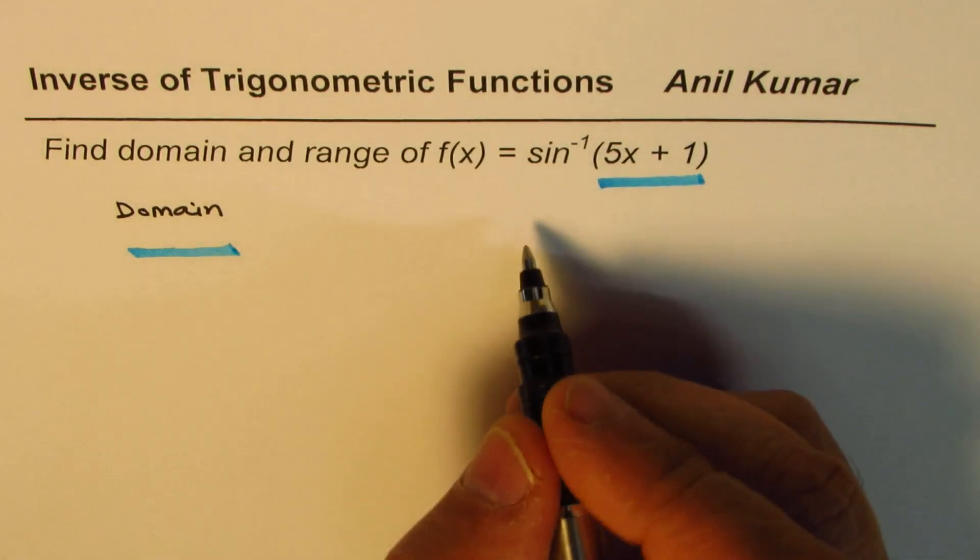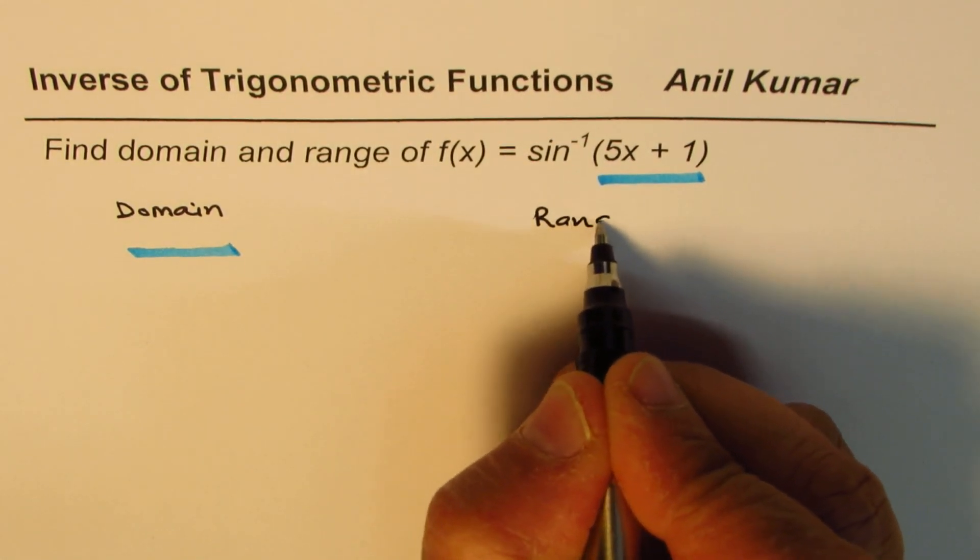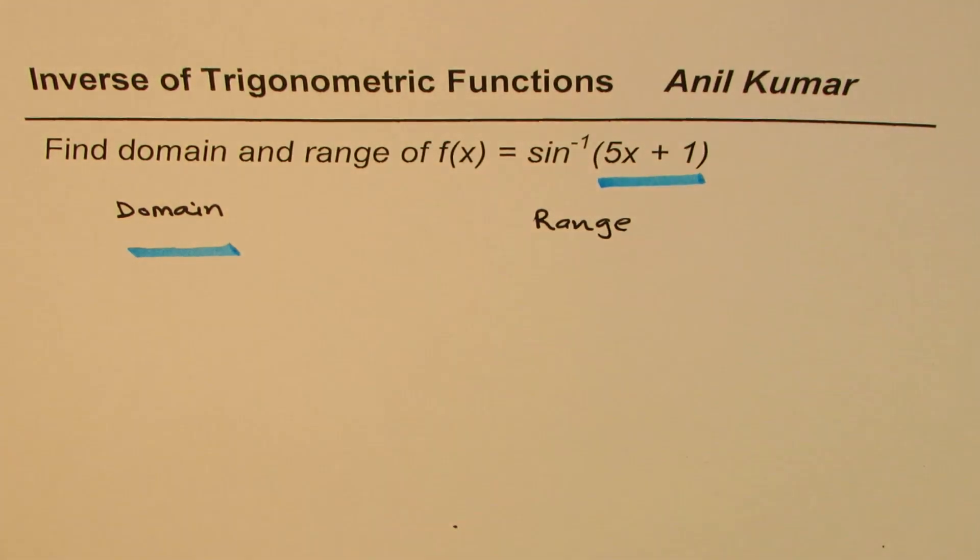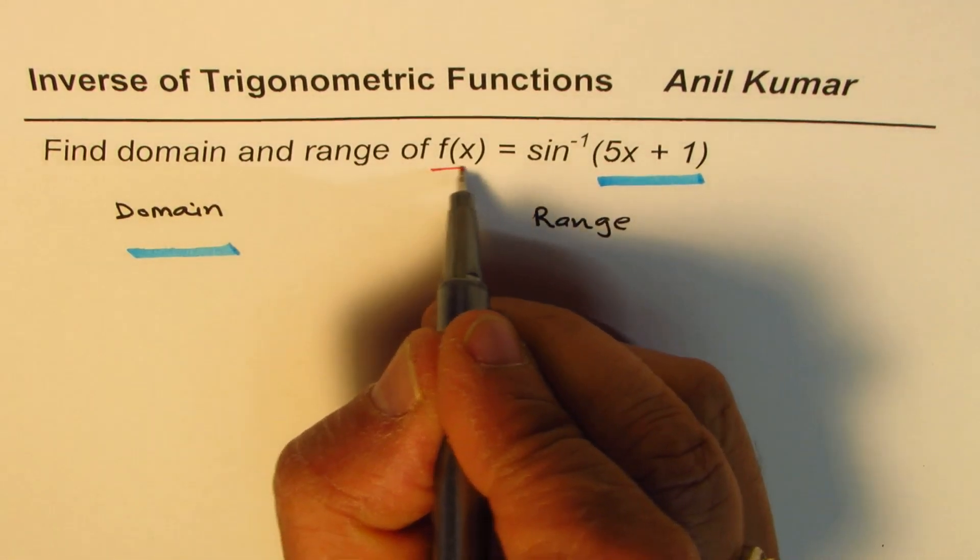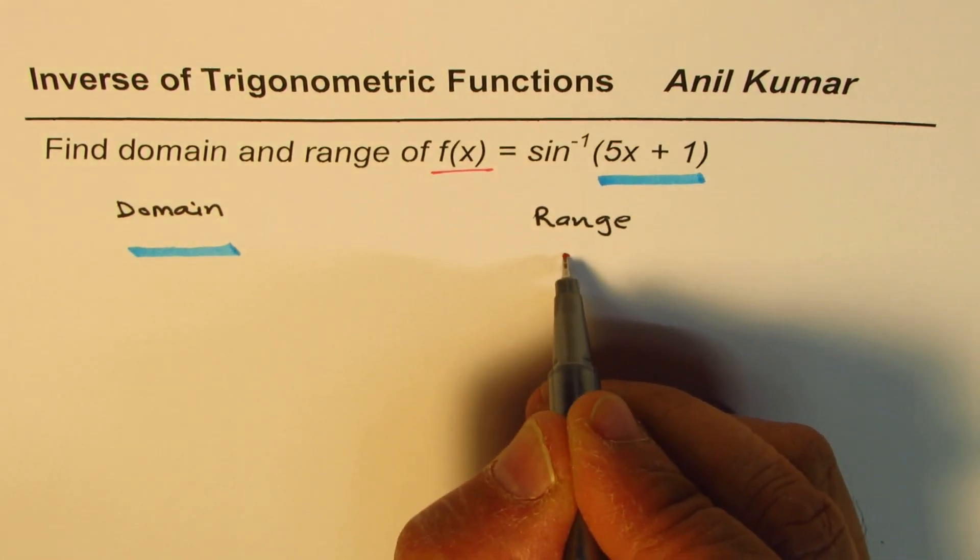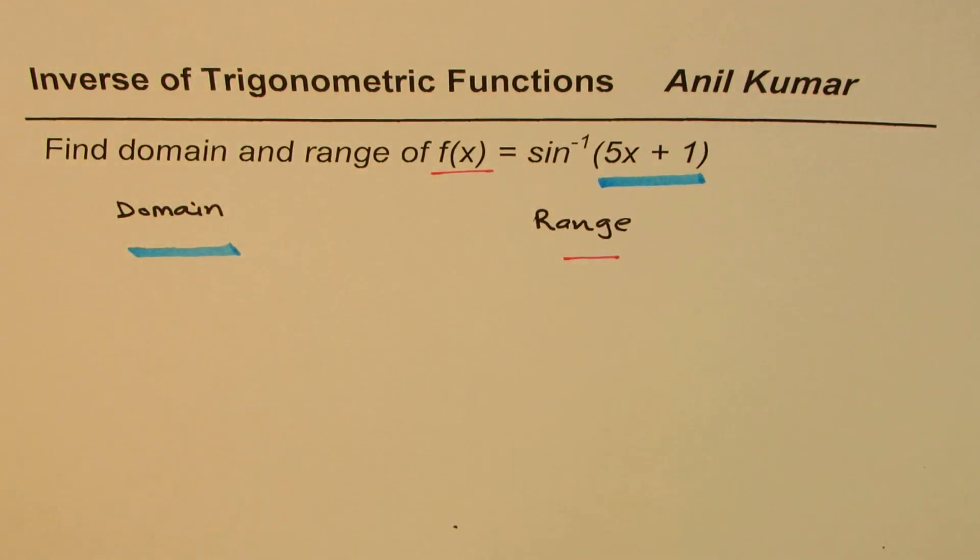As far as the range is concerned, range is the output of this function, which you will get from f of x. The value, the output of this. So that gives you the range.